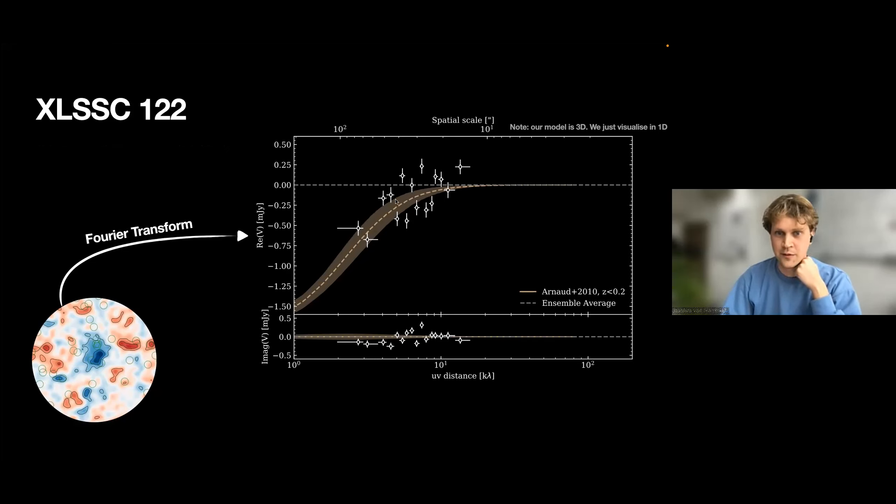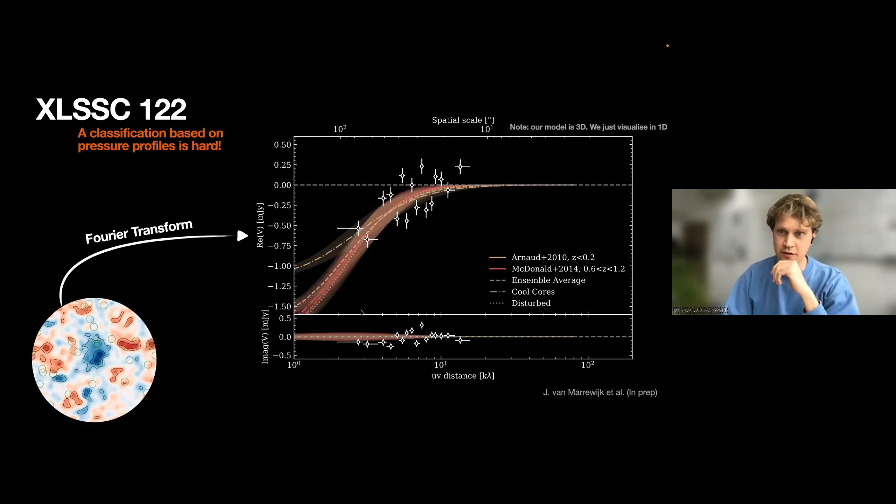It looks beautiful, I think. But the problem is if you want to classify XLSSC based on the pressure profiles I've seen before, and you want to fit for the amplitude, the position, and the ellipticity, it becomes very hard to distinguish different pressure profiles. These are the six lines I've shown before. Here we model for amplitude, the centroid, and the ellipticity, and we keep the shape parameters of the pressure profile similar.